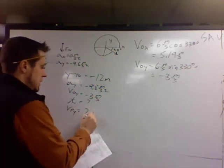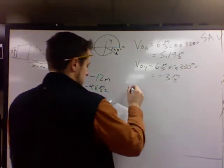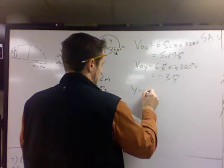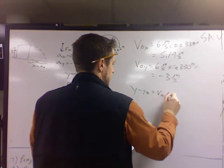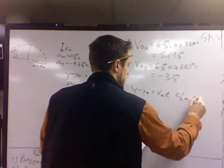So for this first one, I don't care about v final. So I pick my equation. Y minus y naught equals v naught t plus 1 half at squared.